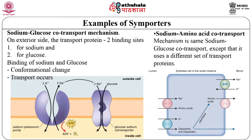Another example is the sodium-amino acid co-transporter. The mechanism is the same as above except that it uses a different set of transporter proteins. Symport or co-transporters are found especially through the epithelial cells of the intestinal tract and the renal tubules of the kidney to enable absorption of these substances into the blood. For example, the Na+/glucose co-transporter, also known as SGLT1, transports in the same direction for both the driving ion and driven molecule. Na+/glucose co-transporters are found in the small intestine and kidney proximal tubules, simultaneously transporting 2 Na+ ions and 1 glucose molecule into the cell across the plasma membrane.